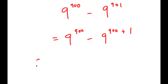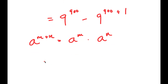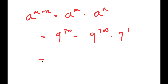From here, if I have something in the form a to the power of m plus n, this is equal to a to the power of m times a to the power of n. So I get 9 to the power of 900 minus 9 to the power of 900 times 9 to the power of 1. And now I can factor out 9 to the power of 900, so I get 9 to the power of 900 times 1 minus 9.